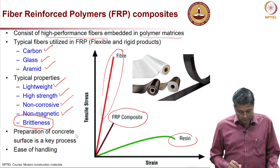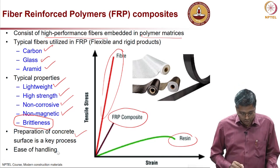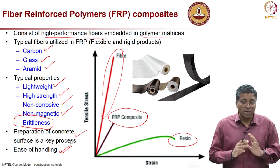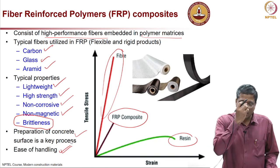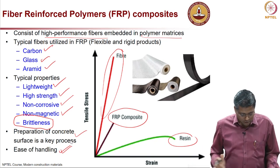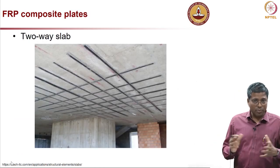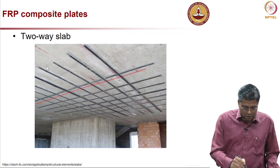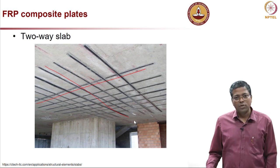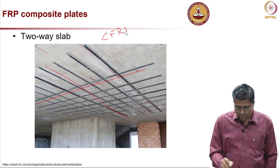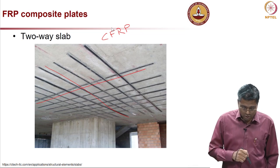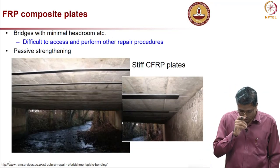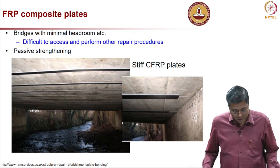Concrete surface preparation is a key process, otherwise the FRP will not glue well. A very positive feature is that FRP is very easy to handle and installation can be done very quickly - some projects complete the entire work in a couple of days. This example shows a two-way slab where CFRP plates are applied going in both directions in a building structure.